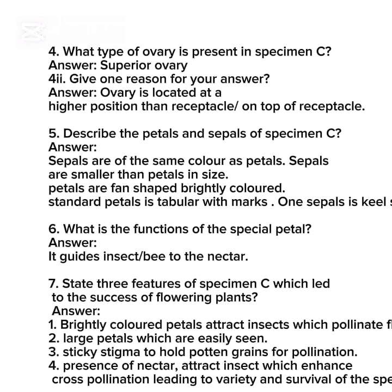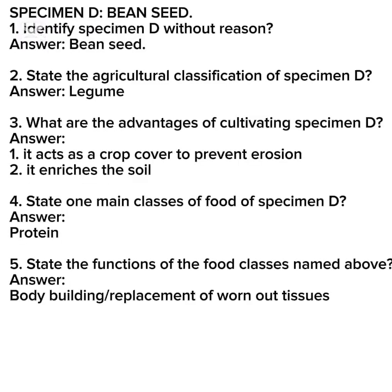Question seven: state three features of Specimen C which lead to the success of flowering plants. Answer: number one, brightly colored petals attract insects which pollinate; number two, large petals which are easily seen; number three, sticky stigma to hold pollen grains for pollination; number four, presence of nectar which attracts insects and enhances cross-pollination, leading to variety and survival of the specimen.